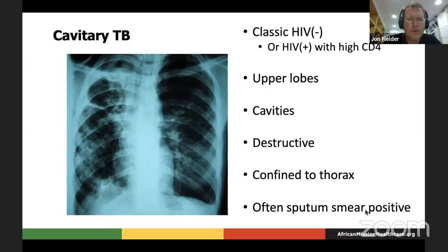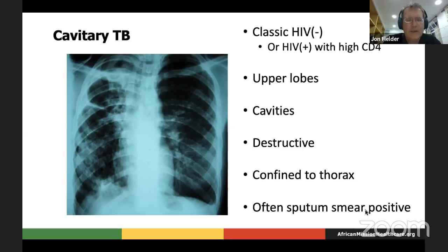What you probably remember from your medical education was the classic upper lobe cavitary disease of HIV-negative tuberculosis, which also occurs with HIV-infected patients who still have a strong immune system. The body localizes the TB and usually prevents it from spreading outside the lung, and TB has a preference for the highly oxygenated areas of the upper lobes. This is a classic X-ray showing a very large cavity in the right upper lobe. These cases can be very destructive — you can see the trachea is deviated to the right — and are usually the ones that will be AFB sputum smear positive.